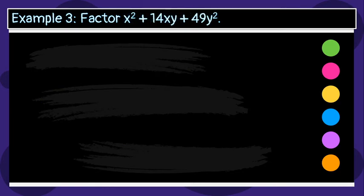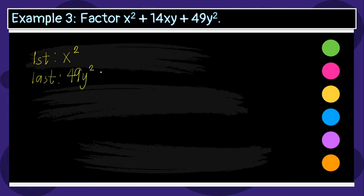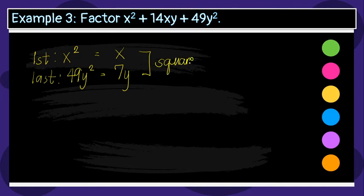Another example. Factor x squared plus 14xy plus 49y squared. Using the same procedure, the first term is x squared and the last term is 49y squared. The square root of x squared is x, and the square root of 49y squared is 7y. These are the square roots.